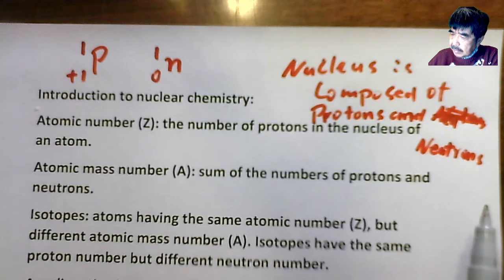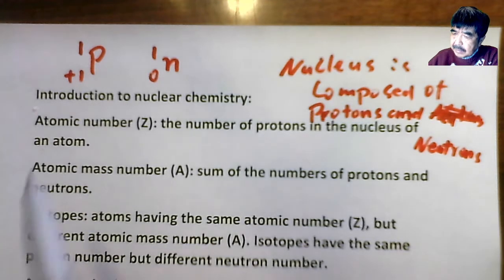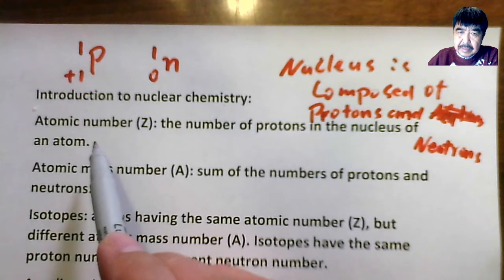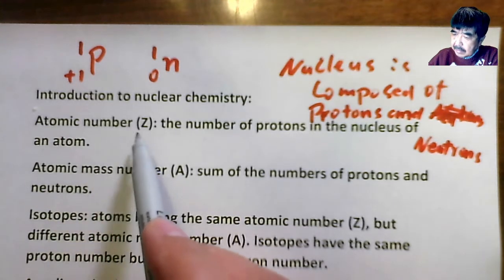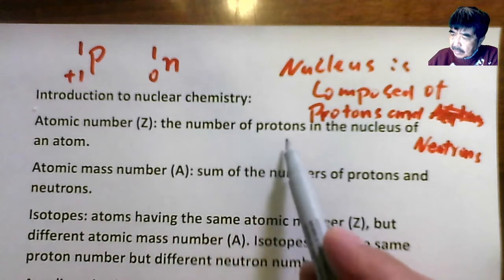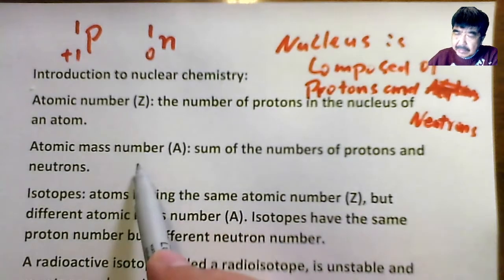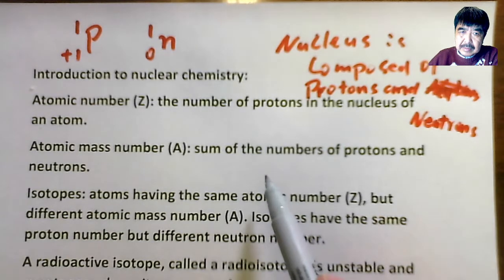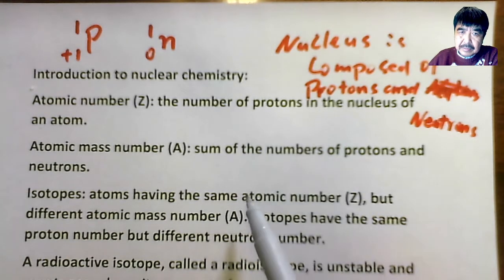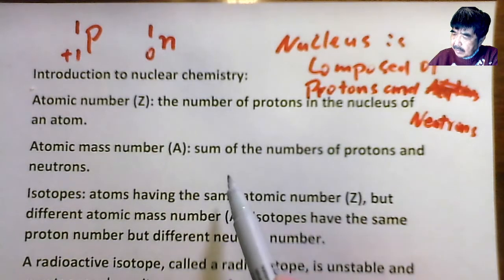Let's take a look at some concepts. The first one we should know in nuclear chemistry is the definition of atomic number — capital Z. Atomic number is the number of protons in the nucleus of an atom. The next is called the mass number, capital A. Mass number is the sum of the number of protons and neutrons. Both protons and neutrons have one mass unit, so the total number is the mass number.